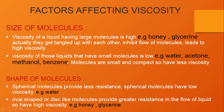Liquids which have small molecules have low viscosity, like water, acetone, methanol, and benzene. Their molecules are small and compact, so they experience less viscosity. The next factor is shape of molecules. Spherical molecules provide less resistance and have low viscosity, like water. Oval-shaped or disc-like molecules have greater resistance to flow and show maximum viscosity, like honey and glycerin.